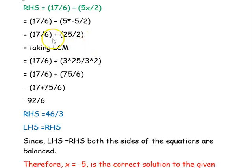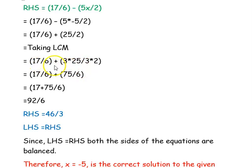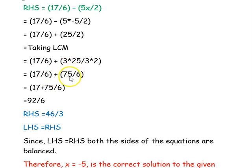The denominators are 6 and 2, which must be made the same. We convert the denominator 2 into 6 by taking the LCM: 17 divided by 6 plus 3 times 25 divided by 3 times 2. The denominator becomes 6, giving 17 divided by 6 plus 75 divided by 6.